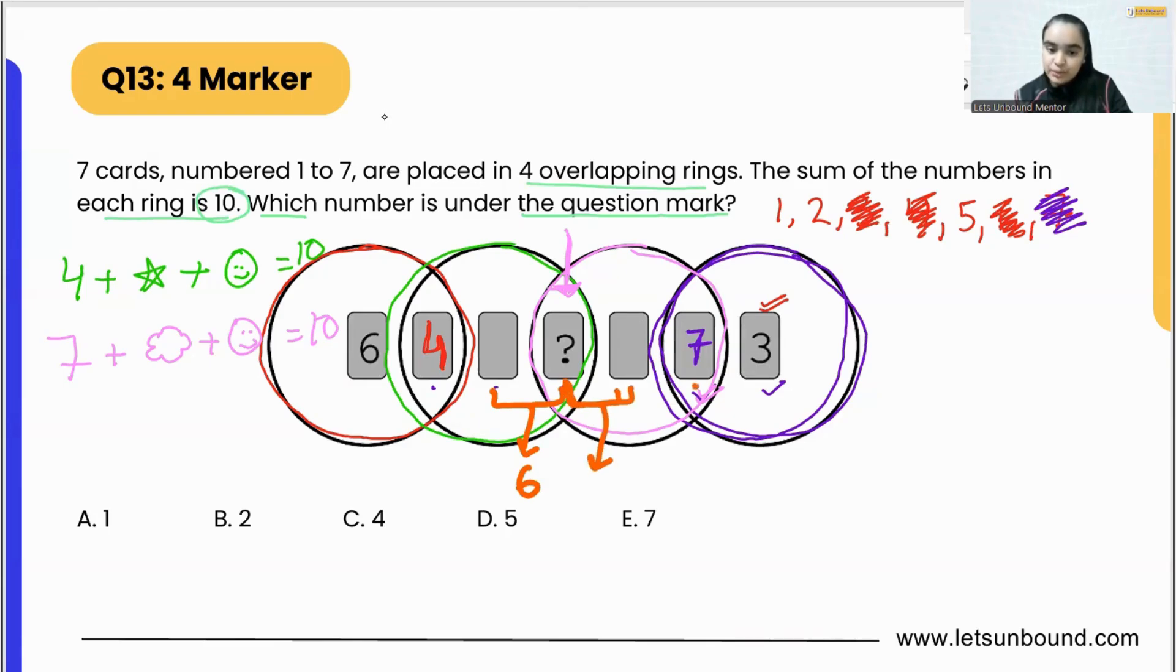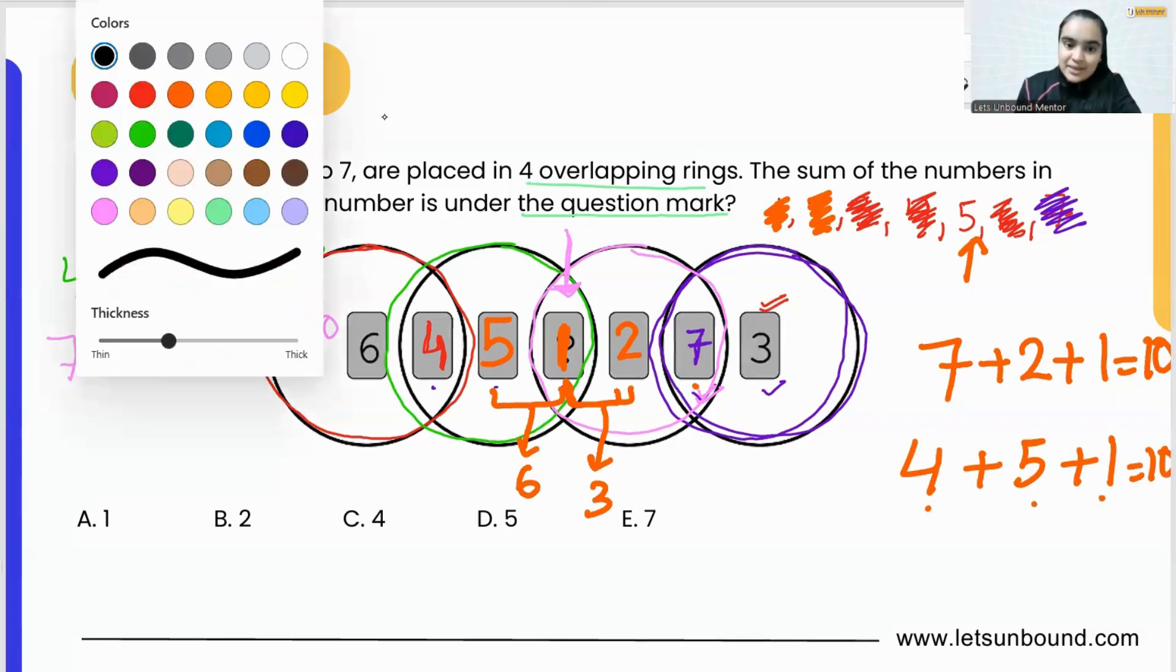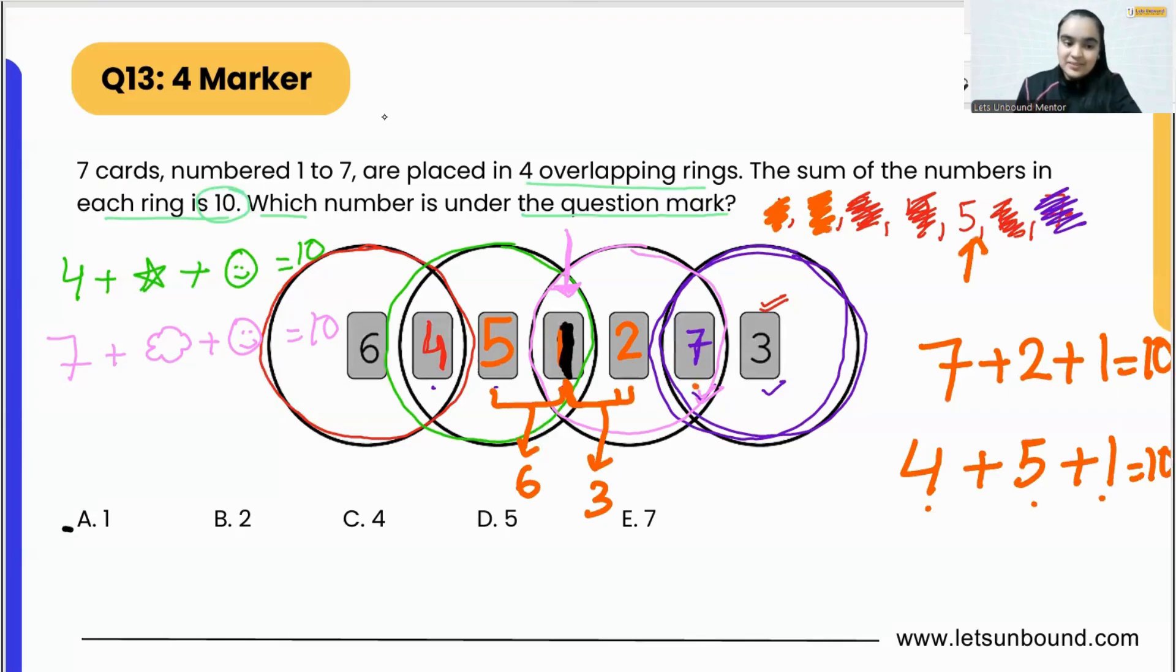So how can we do this? We know 7 plus 2 plus 1 will give us the answer as 10. 7 plus 2 is 9, 9 plus 1 is 10. And then if we are done with 1 and 2 as well, we are only left with 5. Let's see if 5 works over here. 4 plus 5 plus 1, is it going to be 10? 4 plus 5 is 9, 9 plus 1 is 10. Yes, so that means we got our answer. Our answer is number 1, option number A.